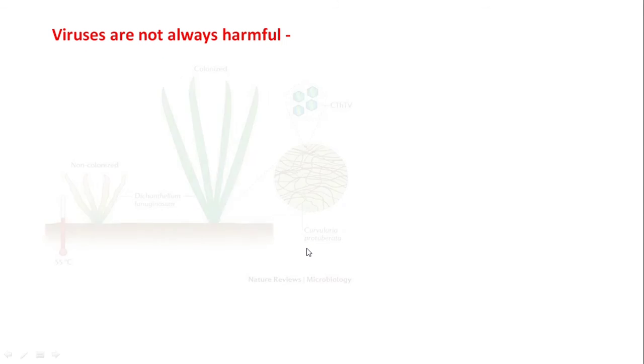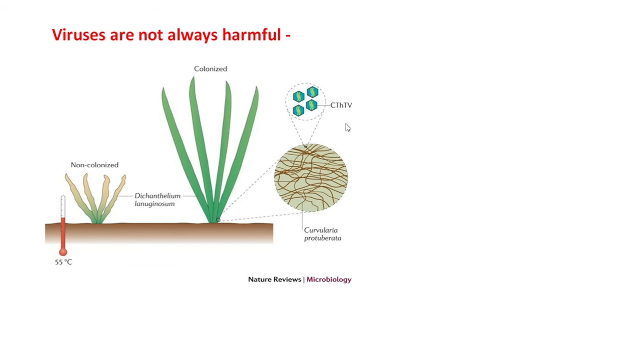But viruses are not always bad. There are some friendly viruses, like this thermal-resistant virus which lives in a fungus called Curvularia protuberata. This fungus parasitizes the roots of a plant called Dichanthelium lanuginosum. Because of this fungus, the plant can grow at high temperatures, about 55 degrees Celsius and more. If this fungus is not present, the plant cannot grow at that temperature. And this fungus will not be able to infect if these viruses are not present in the fungus. So it is a tripartite symbiotic relationship.